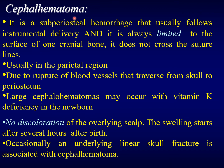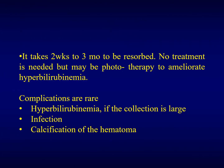On the contrary, the cephalohematoma is a subperiosteal hemorrhage. It usually follows instrumental delivery. It is limited to the surface of one cranial bone and does not cross the suture line. It's usually in the parietal region. It happens due to rupture of the blood vessels that traverse from the skull to the periosteum. Large cephalohematomas may occur with vitamin K deficiency — vitamin K injections are routine after birth. There is no discoloration of the overlying scalp. The swelling starts several hours after birth. It takes around two weeks to three months to resolve — longer than the caput. No treatment is needed; it self-resolves unless the patient develops hyperbilirubinemia and may need phototherapy or other maneuvers to reduce the bilirubin.